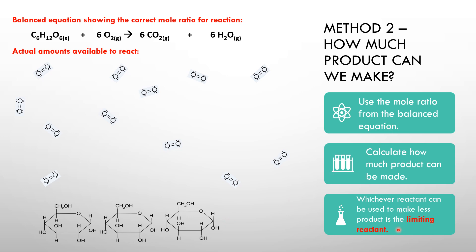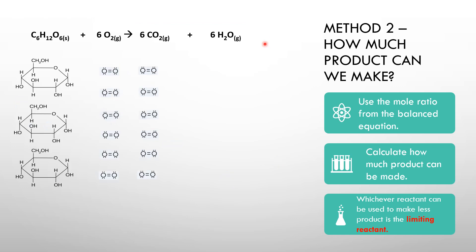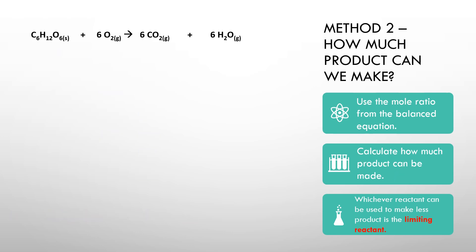We have the same situation — twelve oxygen molecules and three glucose molecules — but a different procedure. We're still talking about Method 2. The way we're going to do it is use the mole ratio from the balanced equation to calculate how much product can be made from each reactant. Whichever reactant can be used to make less product is the limiting reactant.